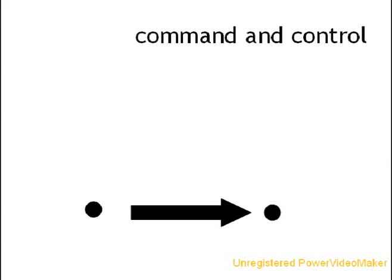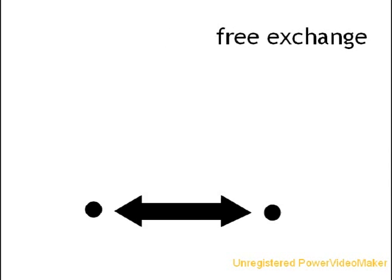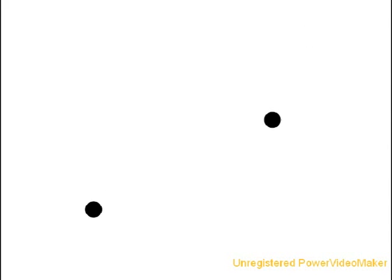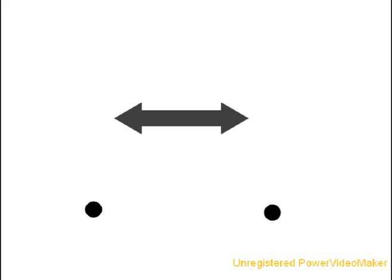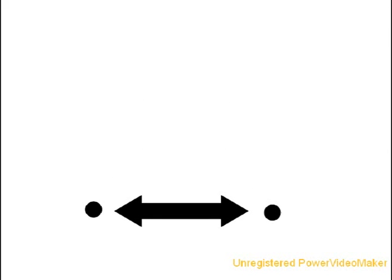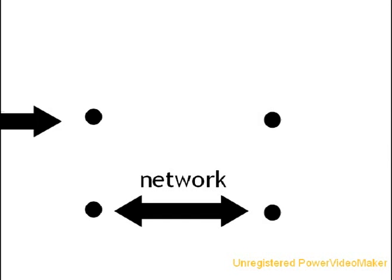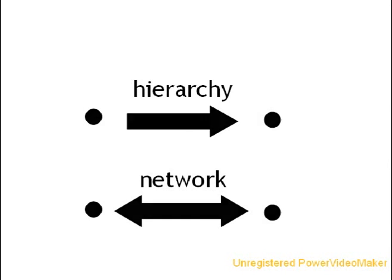The first way can be referred to as command and control, because in this system one node gives the orders while the other carries out the orders. The second way can be referred to as free exchange, because the relationship is more reciprocal — cooperative and voluntary. Systems built around free exchange are called networks. Systems built on relationships of command and control are called hierarchies.